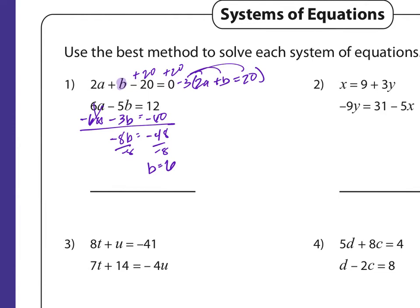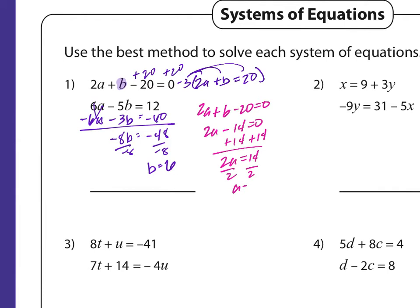Then I'll take one of the equations — it doesn't matter which — and substitute in. I'll use the first equation: 2a plus 6 minus 20 equals 0, so 2a minus 14 equals 0. Add 14: 2a equals 14. Divide by 2: a equals 7. Written as an ordered pair, a comes before b, so that's (7, 6).